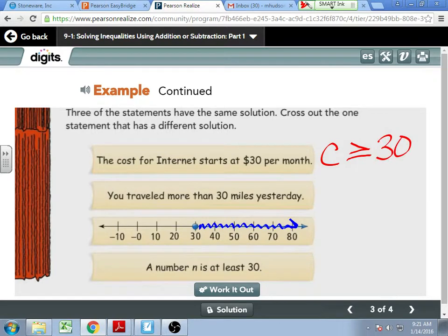Yeah, if it starts at $30, that means the cost will be either equal to $30 or more than $30. Thomas, can you put your hands out so I know that you're writing with us? Thanks man. I know it's kind of cold. You traveled more than 30 miles yesterday. Isaiah, how'd you write that out? N is greater than 30. Could you have traveled 30 miles?